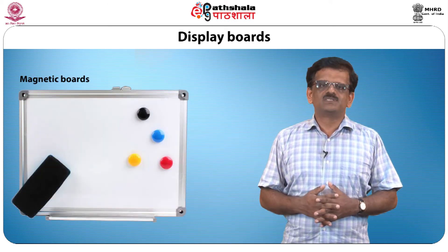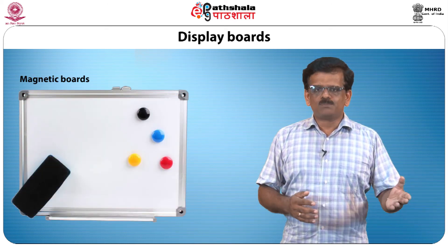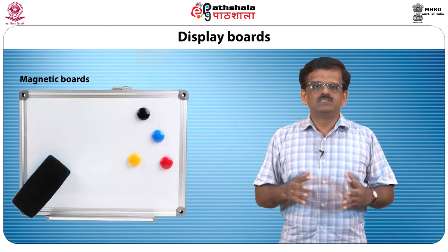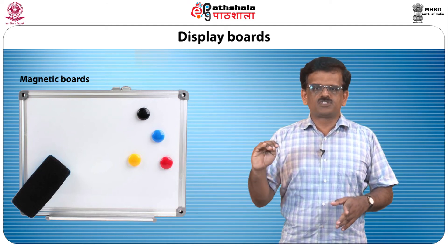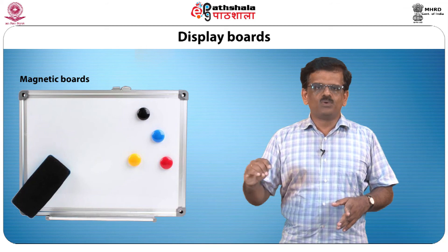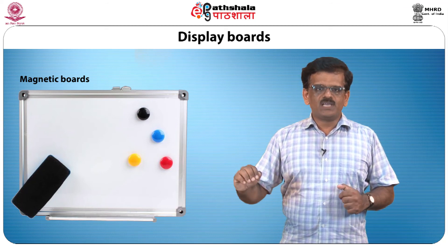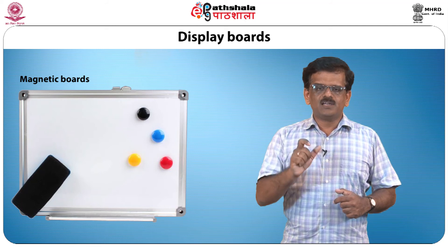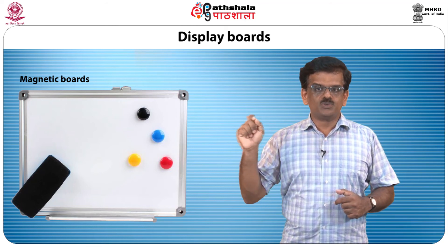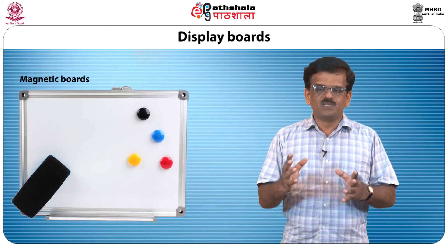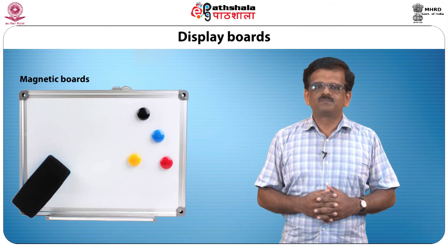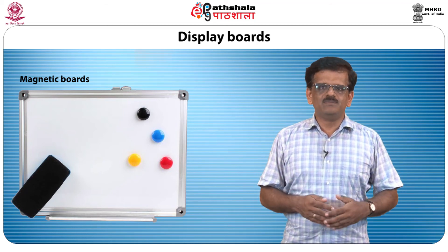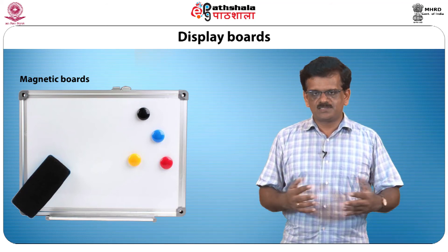Magnetic boards are display boards made of a milky glass sheet with four magnetic strips spread over its length, where iron letters can be fixed and used to display messages in a creative way. If tube lights are fixed at the back of the glass, the material is visible even at night.